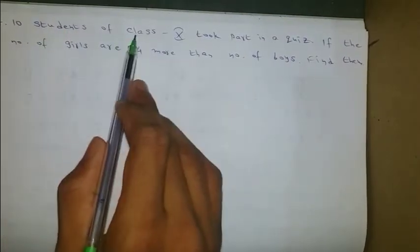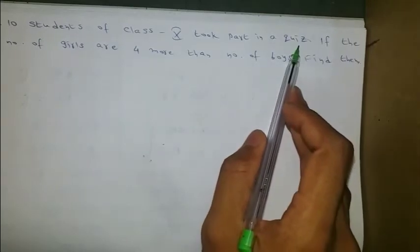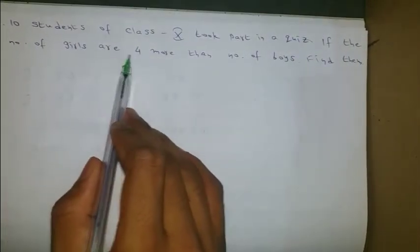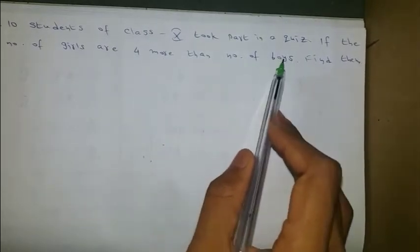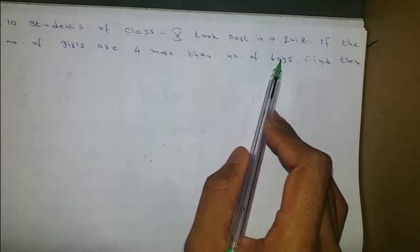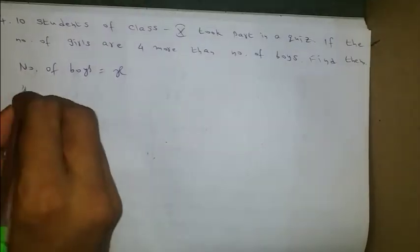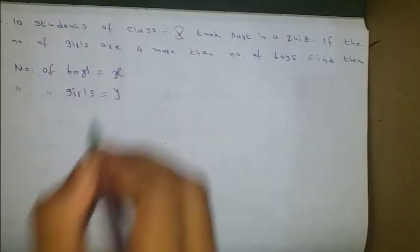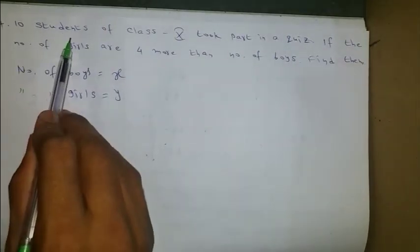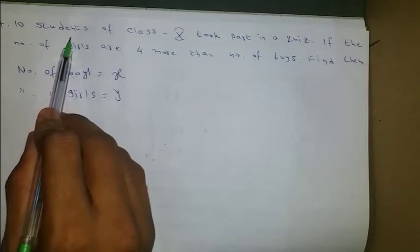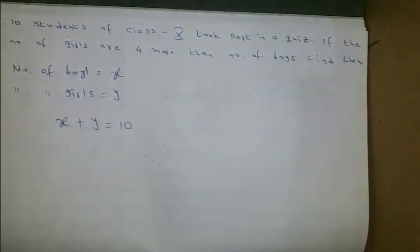10 students of class 10 took part in a quiz. If the number of girls are 4 more than the number of boys, find how many girls and how many boys there are. I am taking number of boys as x and number of girls as y. Together they are 10, so x plus y equals 10. This is the first equation.